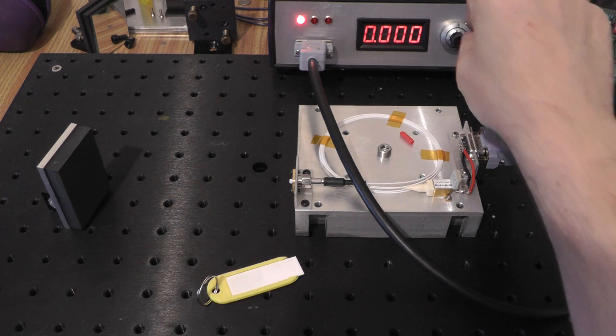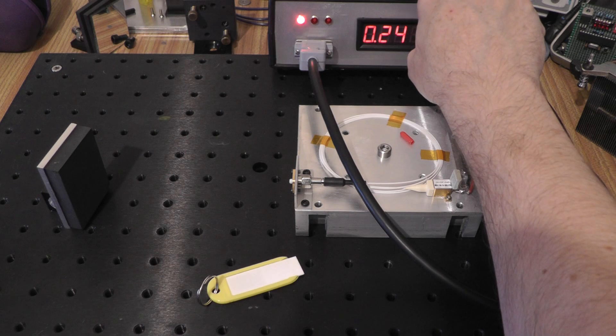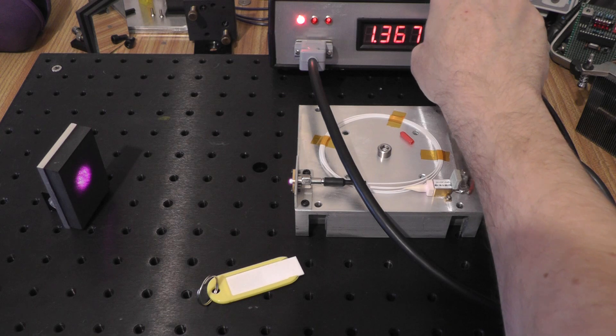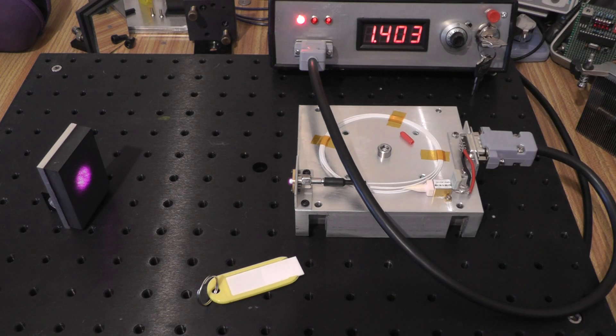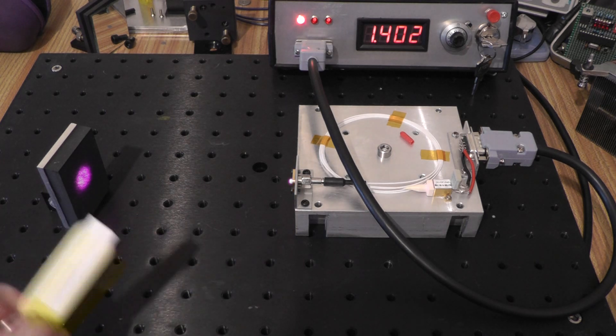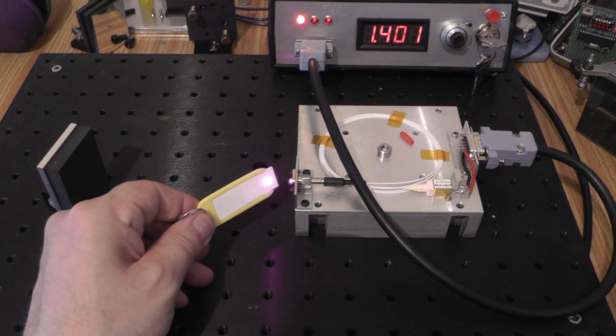So we're all powered up. I'm going to take it to just above threshold. So that'll be just over an amp. So we're at 1.4 amps now and we'll be on threshold. On camera at least I can see that there's a spot on the graphite target. For my purposes, I can see nothing. But if I hold the infrared detector card in front of the output there, I can see the greenish-yellow fluorescence of the card.